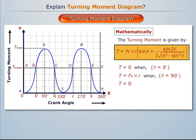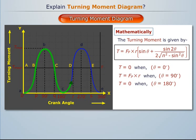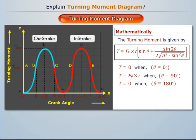The turning moment once again becomes zero when the crank angle is 180°. The turning moment diagram for a single cylinder shows curve ABC representing the out-stroke, and curve CDE representing the in-stroke.